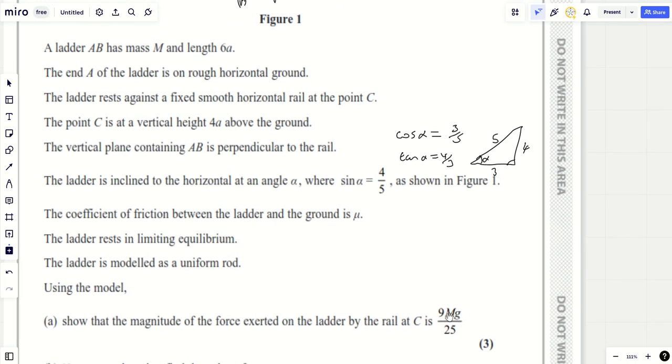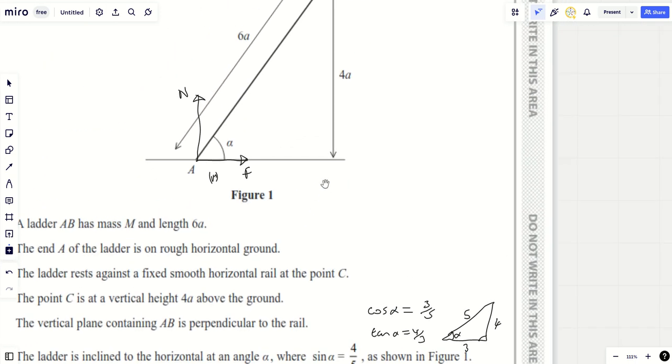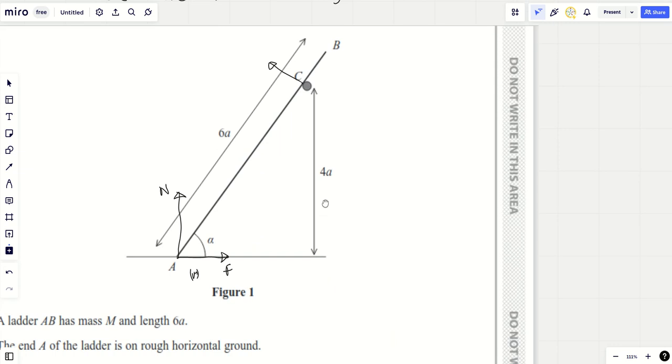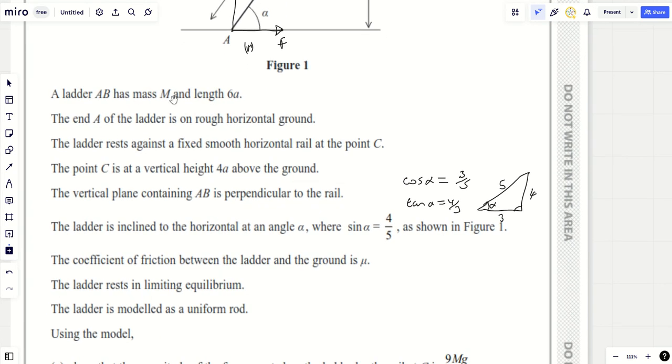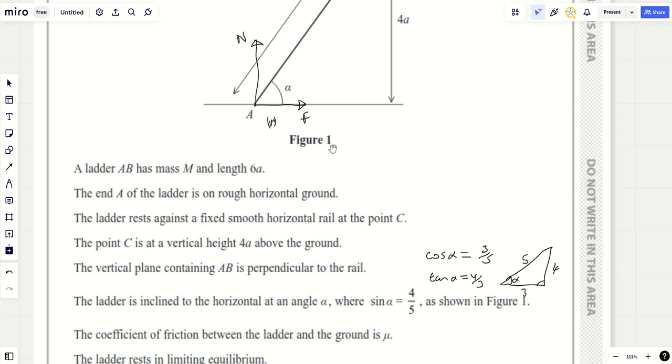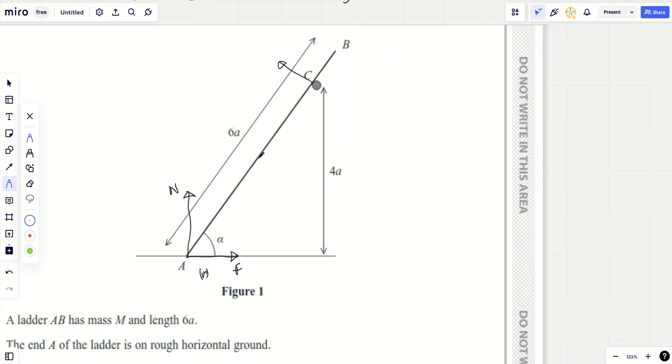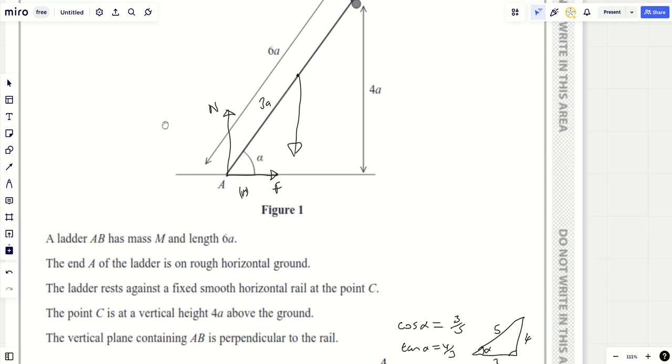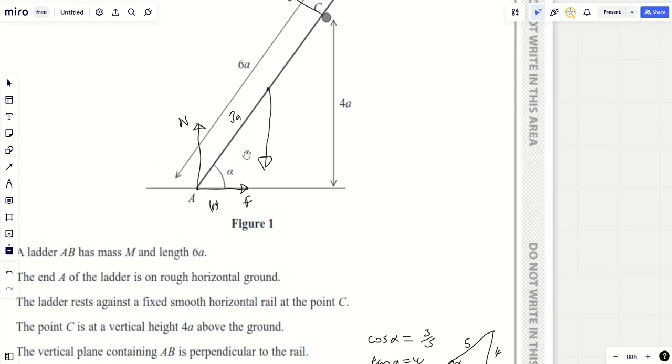I might be able to get this by doing lefty-righties and uppy-downies, but I might also need to take moments. Let's try and work out what we're going to need to do. What haven't I put on this diagram? The mass of the actual uniform ladder—that's a big omission. Let me get that on. So that's 3a.